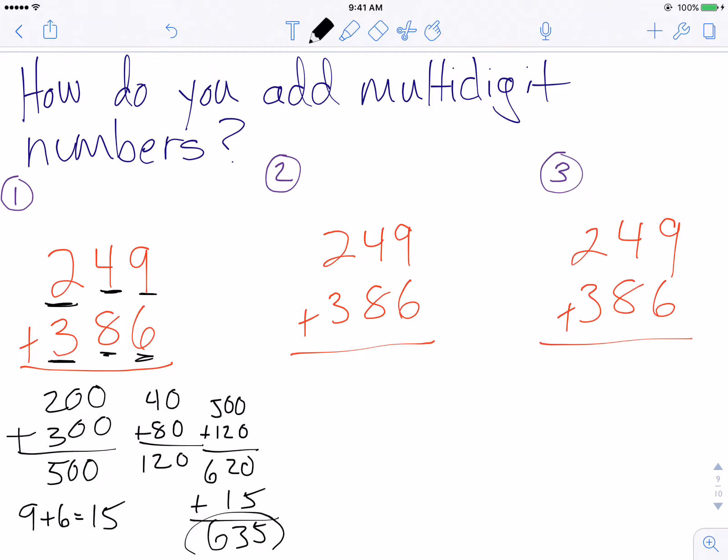The second method, which I'll explain under number two here, is very similar to just regular regrouping. So we add the ones column first.